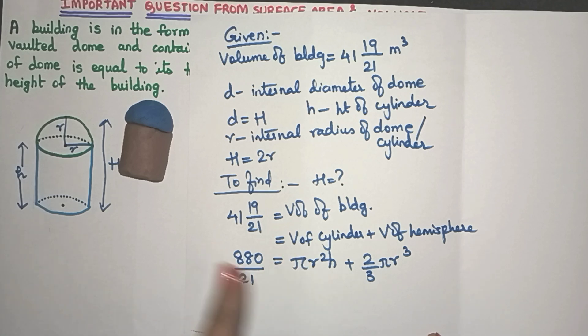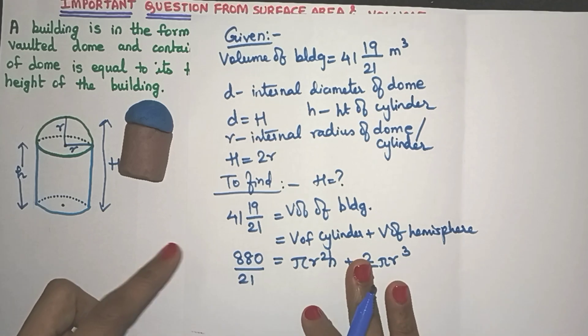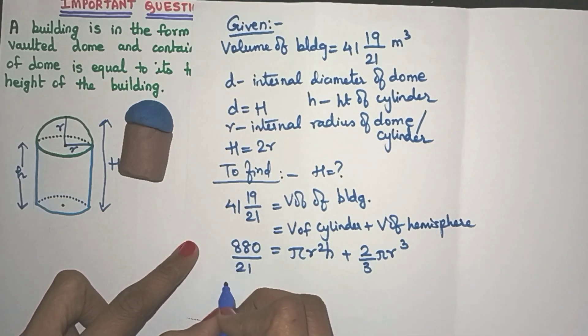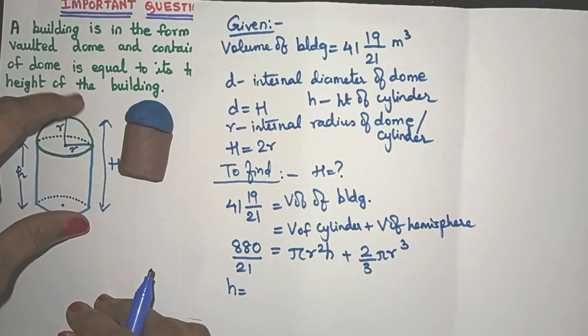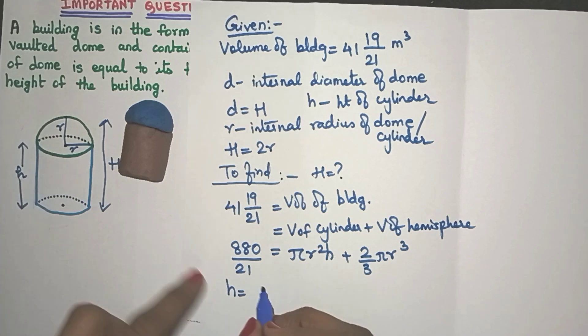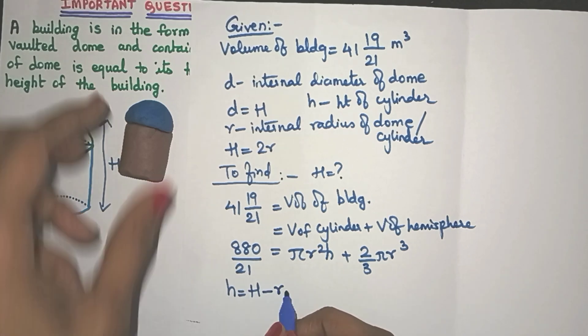Well, somehow we have to get rid of one of the variables. So friends, let's see what is this H. H or the height of the cylinder is over here and this is my capital H. So can I say that small H is nothing but capital H minus R?